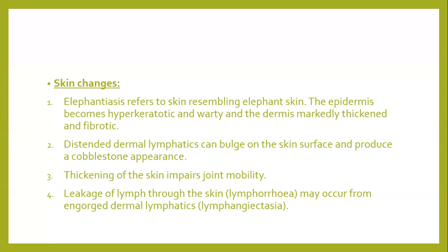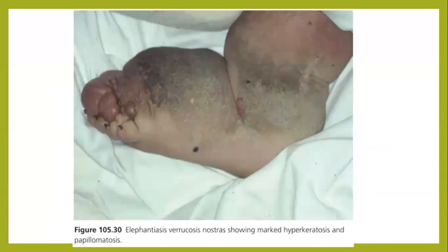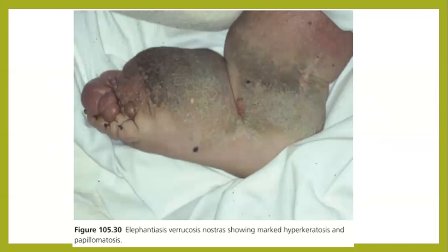Lymphangiectasia refers to engorged dermal lymphatics, and lymphorrhea is the extrusion of lymph from these lymphatics. This is elephantiasis verrucosa nostra, showing marked hyperkeratosis and papillomatosis.